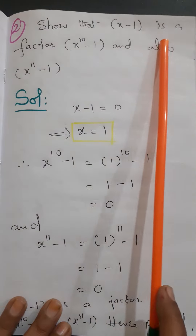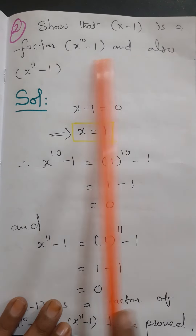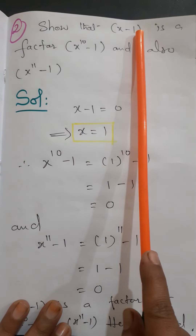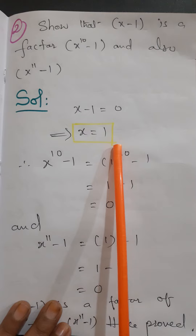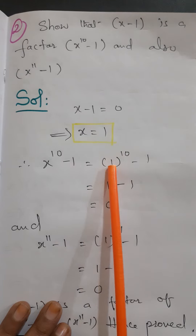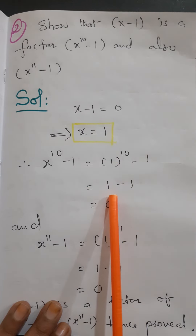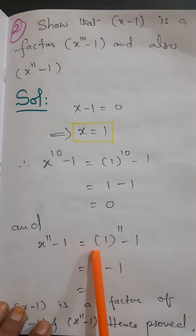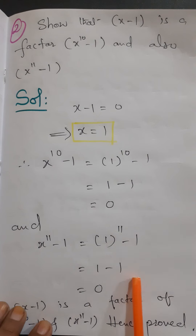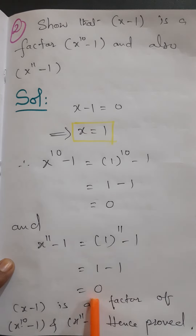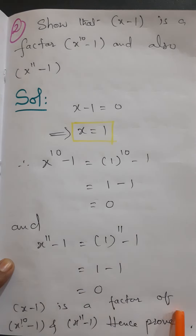Question 2: Show that x - 1 is a factor of x¹⁰ - 1 and also x¹¹ - 1. Setting x - 1 = 0 gives x = 1. Substituting into x¹⁰ - 1: 1¹⁰ - 1 = 1 - 1 = 0. Similarly, x¹¹ - 1 = 1¹¹ - 1 = 1 - 1 = 0. Since we get 0 both times, x - 1 is a factor of both x¹⁰ - 1 and x¹¹ - 1.